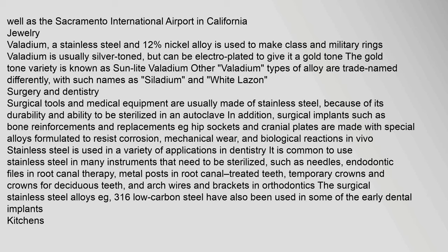Valadium, a stainless steel and 12% nickel alloy, is used to make class and military rings. Valadium is usually silver-toned but can be electroplated to give it a gold tone, known as Sunlight Valadium. Other Valadium-type alloys are trade-named differently, with names such as Saladium and White Lasagne.